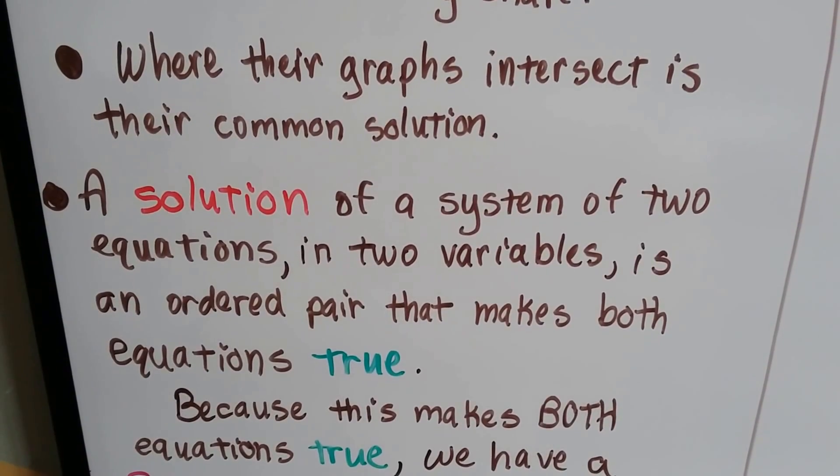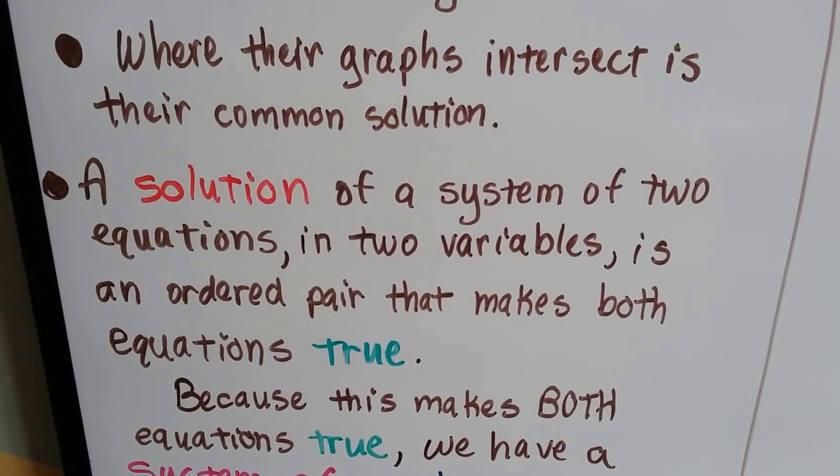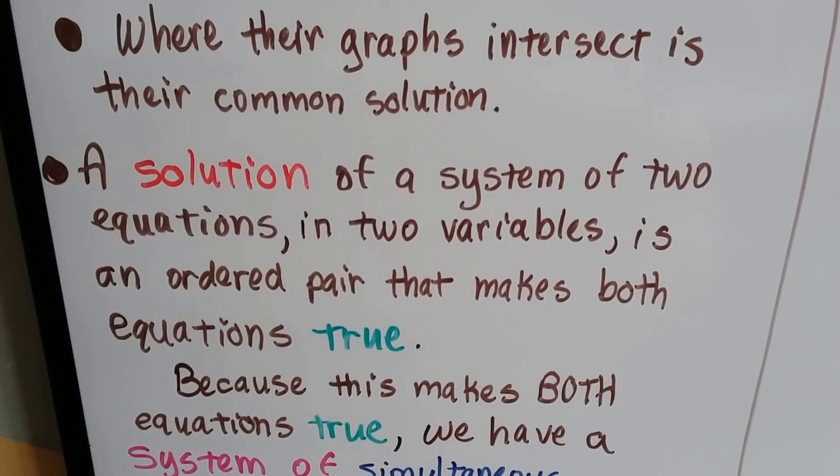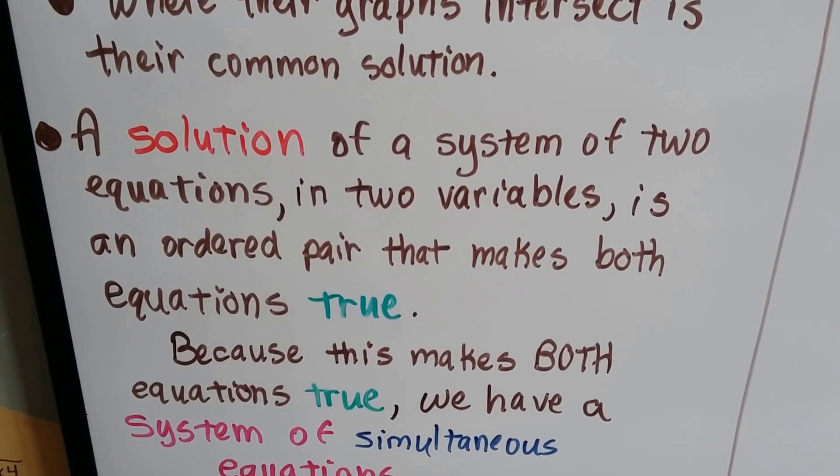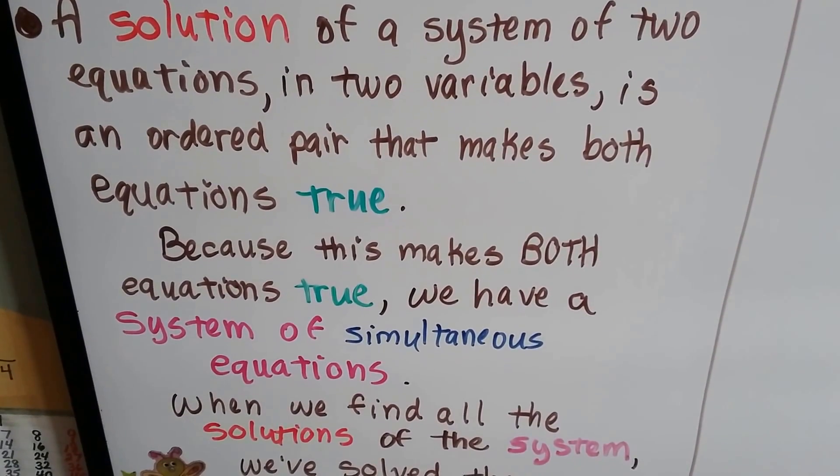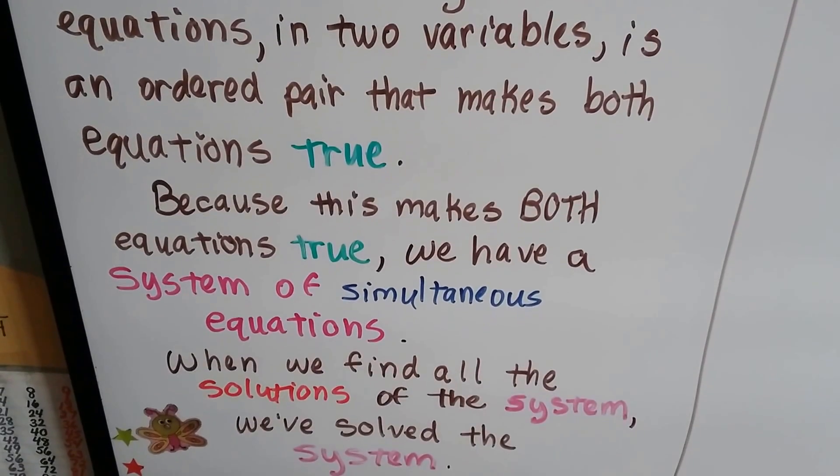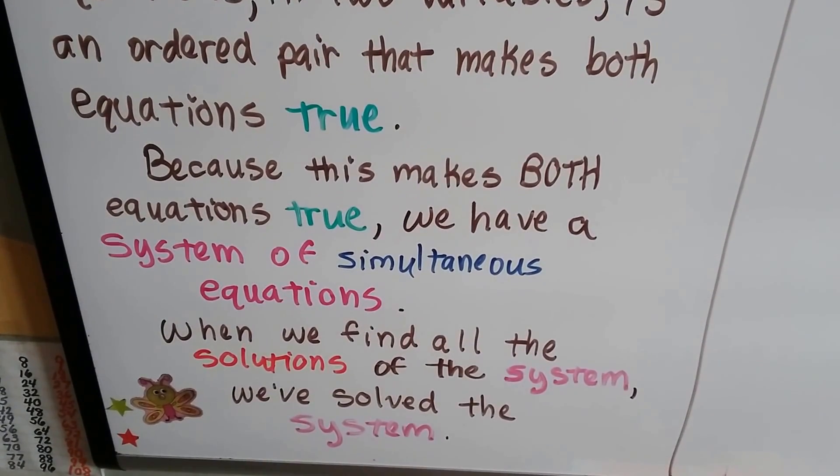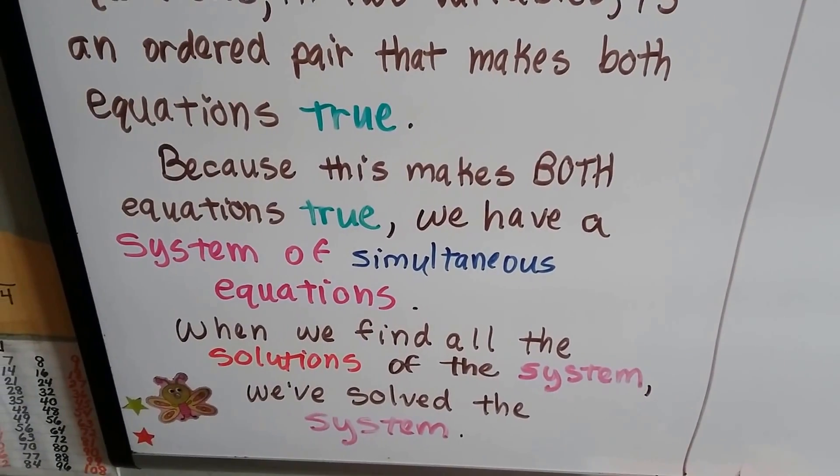A solution of a system of two equations with two variables is an ordered pair that makes both equations true. And because this makes both equations true, we have a system of simultaneous equations. When we find all the solutions of the system, we've solved the system.